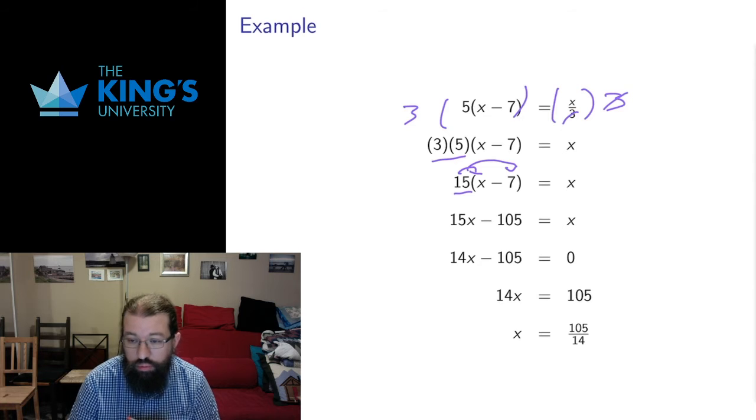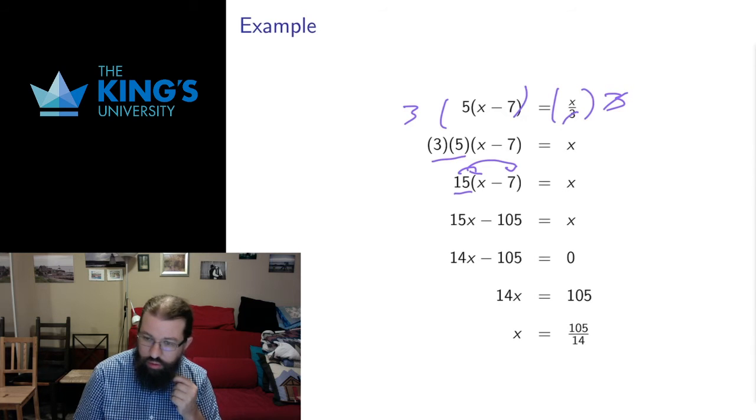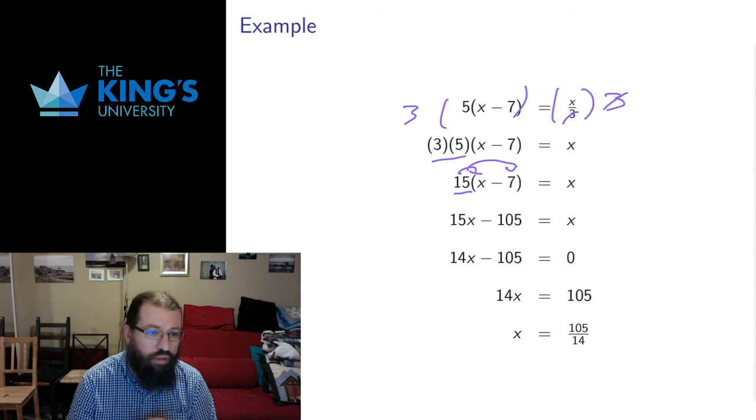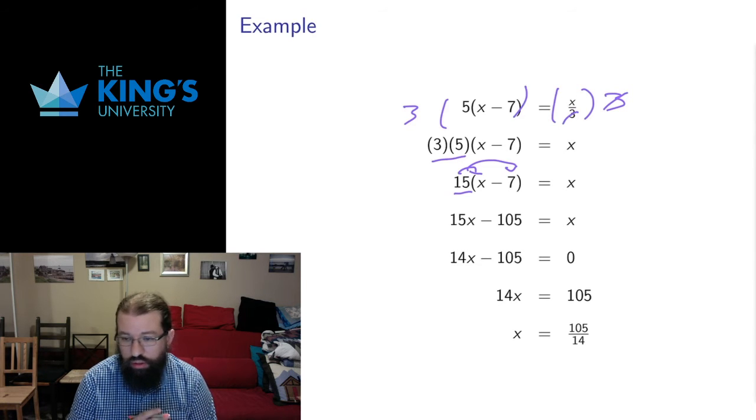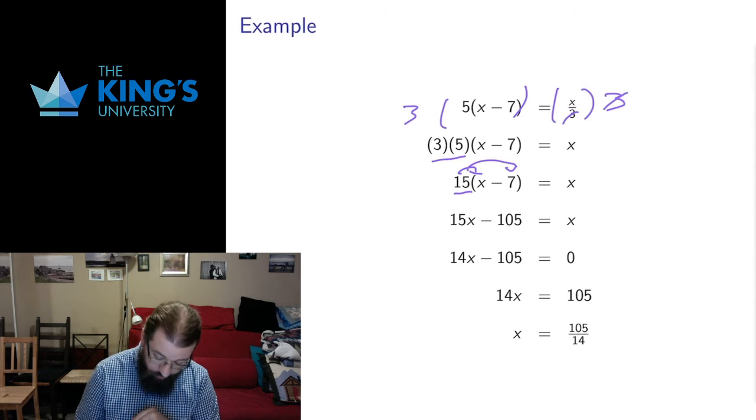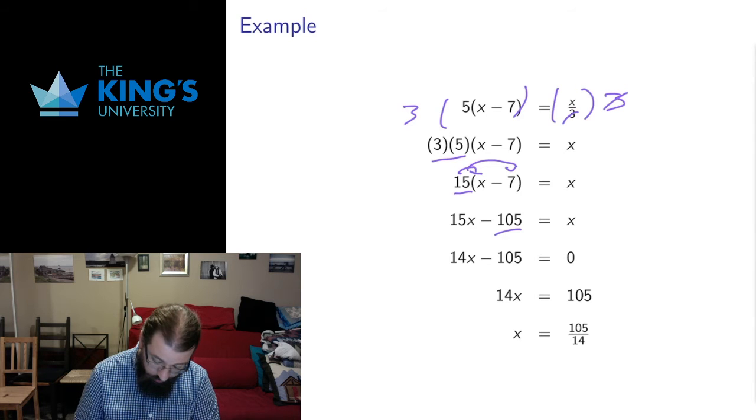This isn't something I'm doing to both sides of the equation. This is just something I'm doing to the left side. But the distributive law doesn't change anything. It's the same expression, just written in a different way. So I'm allowed to do this distribution. 15 times 7 is 105.